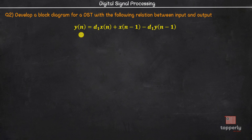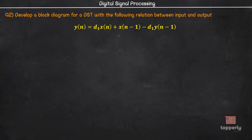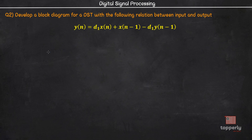Here we are given with a relation between input and output and we have to develop a block diagram for the discrete time system from this relation. This is actually a very simple exercise — all you have to do is build a block diagram for each of the terms and then add them together using an adder circuit. So let's create a signal path for x of n and a signal path for y of n. Now let's draw the block diagram for the first term which is d1 times x of n.